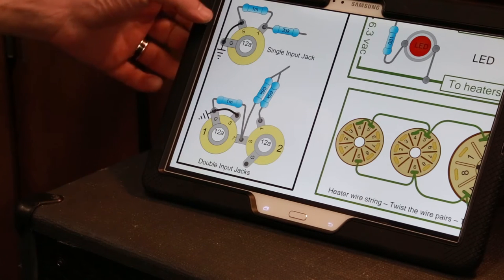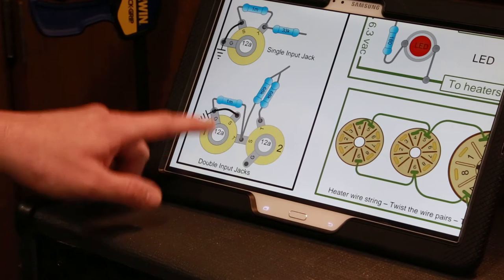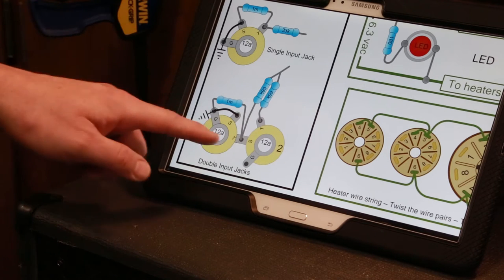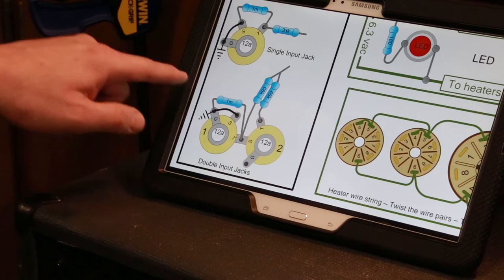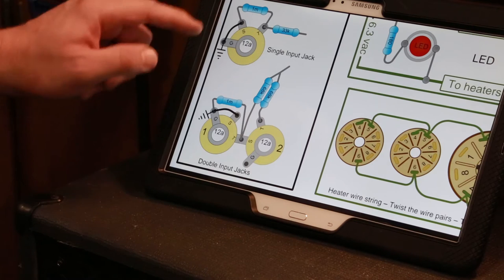He shows a single input jack versus a dual input jack. The single input jack and the dual both have the same kind of switched point of the jack to ground as well as a 1MG from tip to ground.